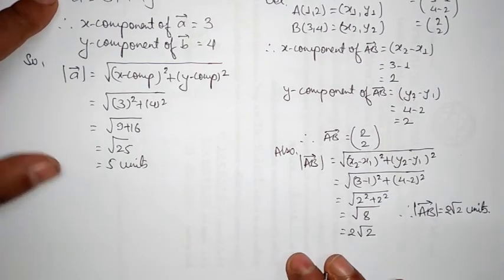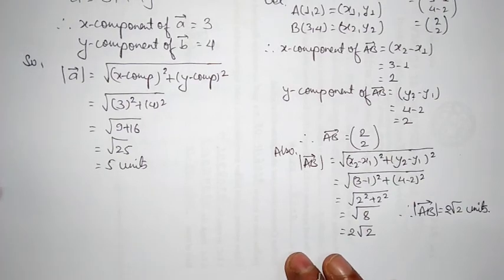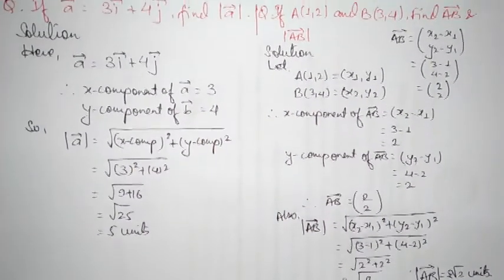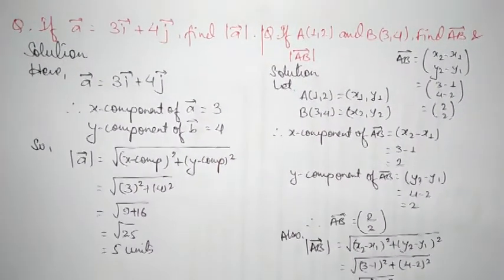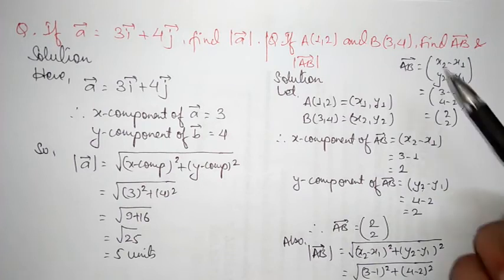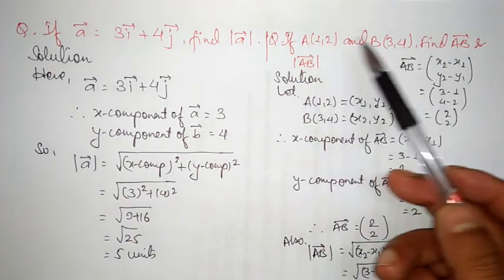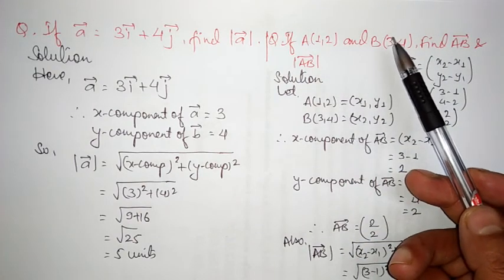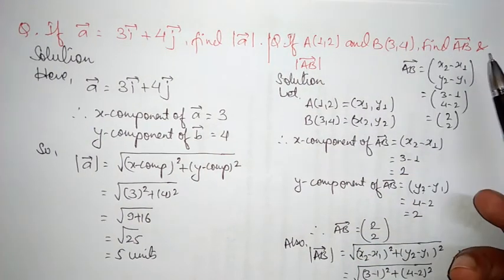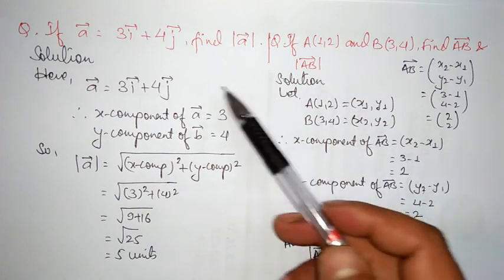In this way, we can find the vector when its initial point and terminal point are given, as well as its magnitude.